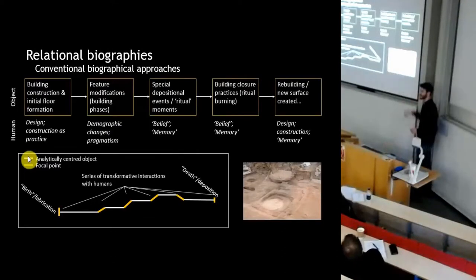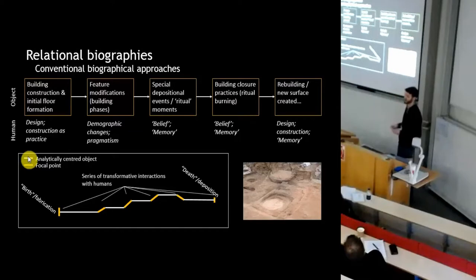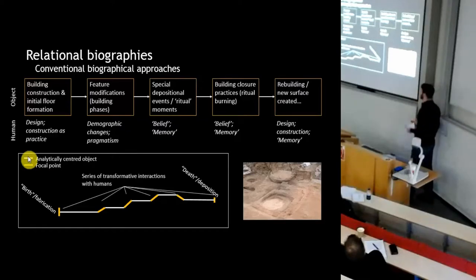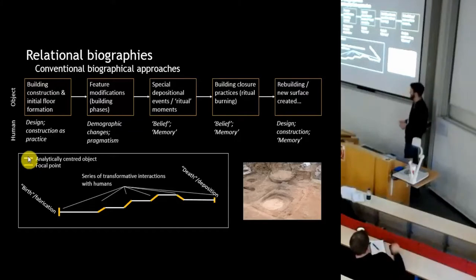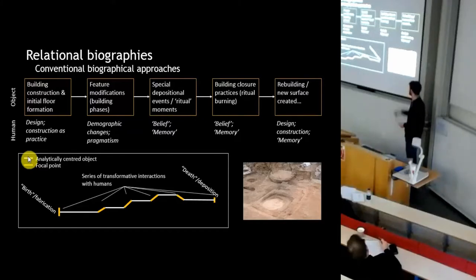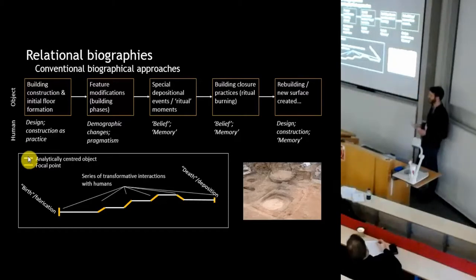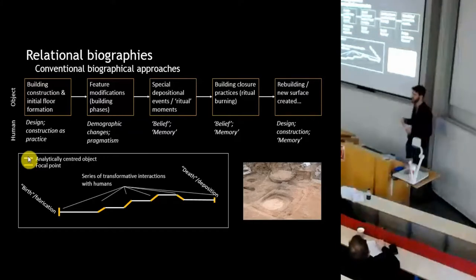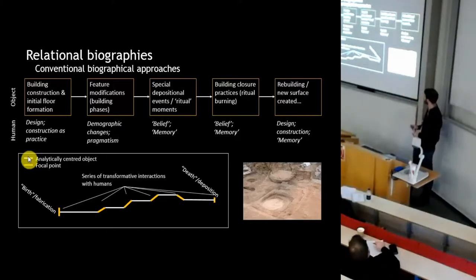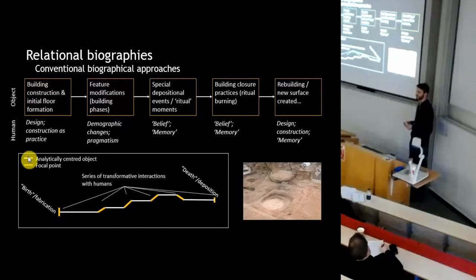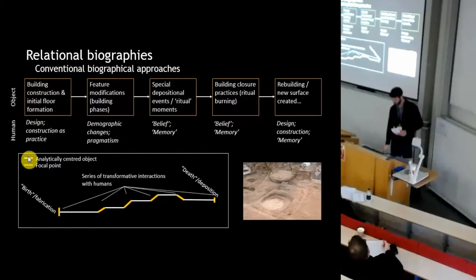If we do this with one of my house kitchens, we can nicely line up building construction, initial floor formation, the design process, a series of feature modifications, and some special ritual depositions — caches of obsidian, ochre, sometimes dead infants around ovens — and then the sometimes very elaborate closure practices at Çatalhöyük. This particular house was burned quite dramatically at the end of its life and then rebuilt on the same floor plan, using the walls as foundations for a house completely superimposed above it. Different kinds of events tie into different interpretive angles on human existence.